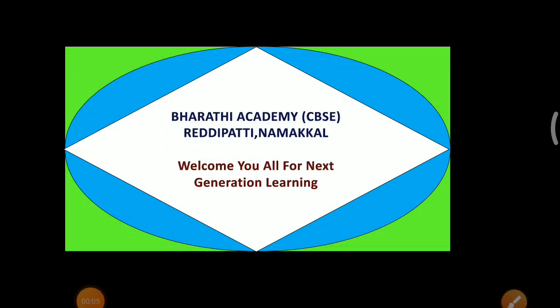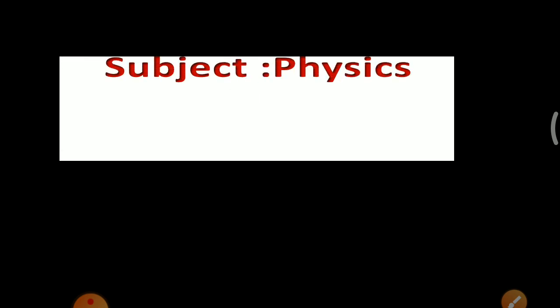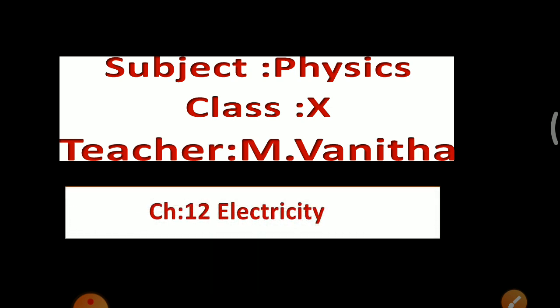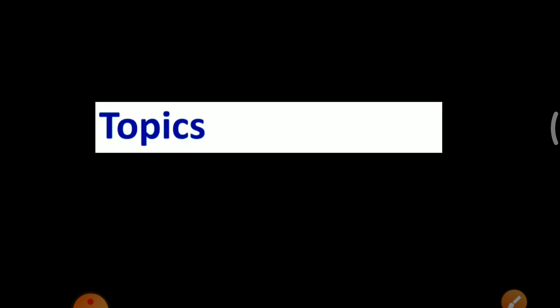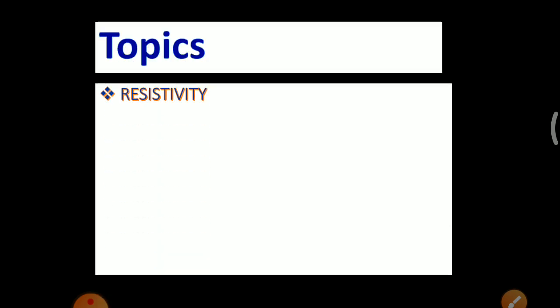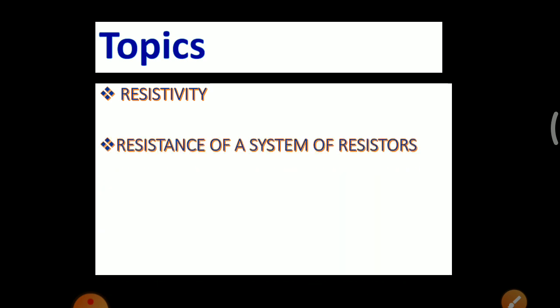Good morning students, welcome to next generation learning. Today we are going to see Physics class 10, Chapter 12 Electricity. Topics: Resistivity and Resistance of a system of resistors.